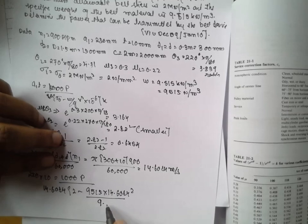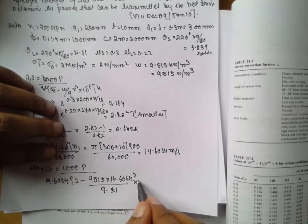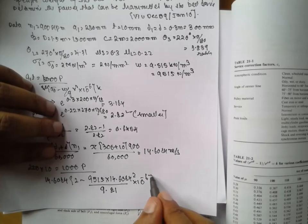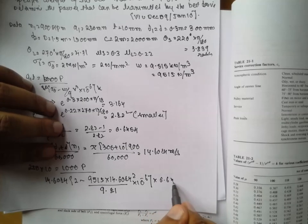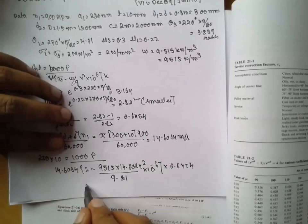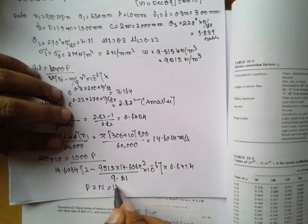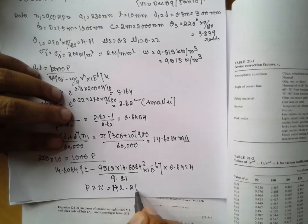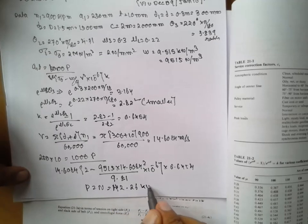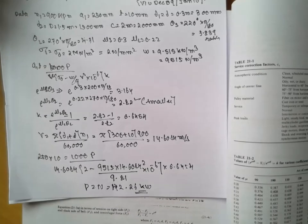I will take 9.81. You can go for data handbook into 0.6454. The P value will be 42.26 kilowatts. I am Santosh Gannankar. Thank you very much.